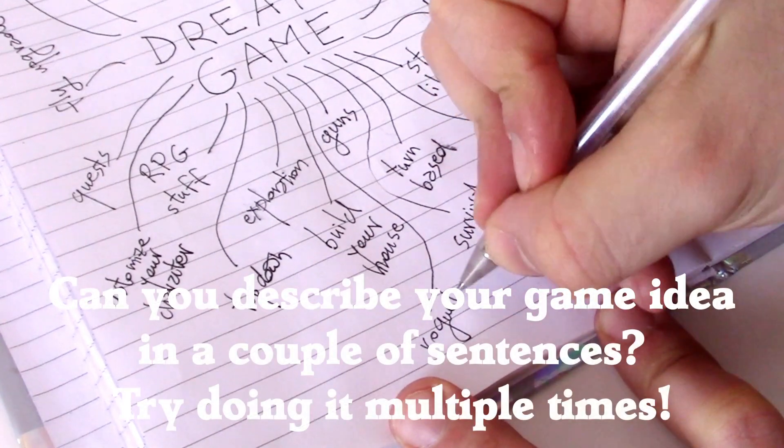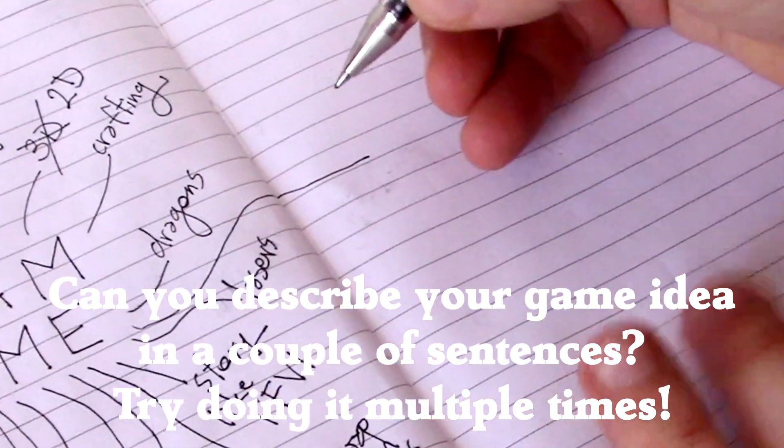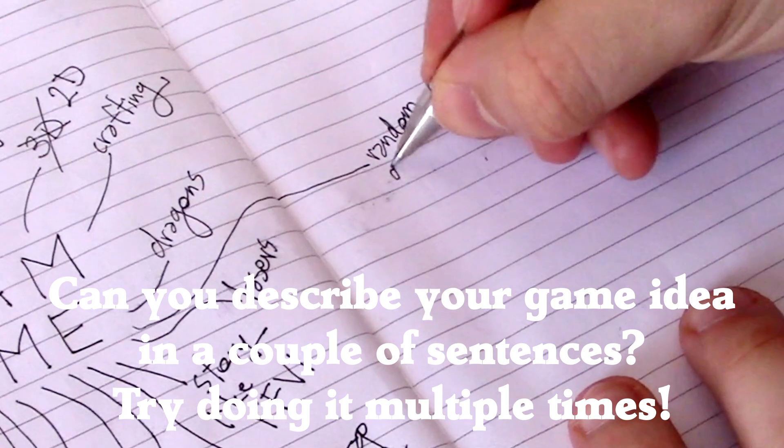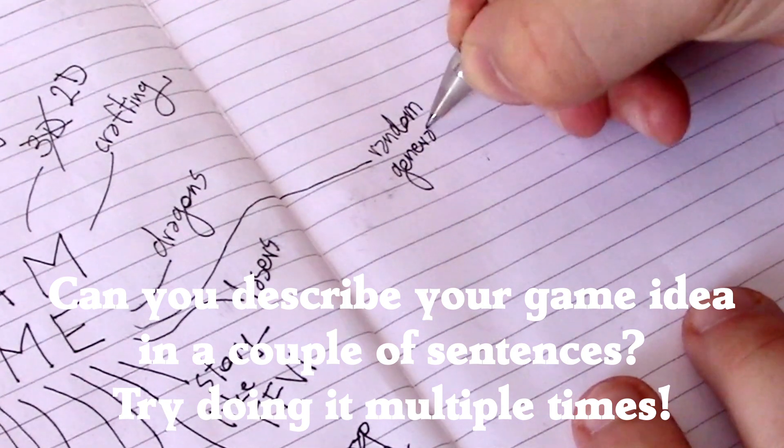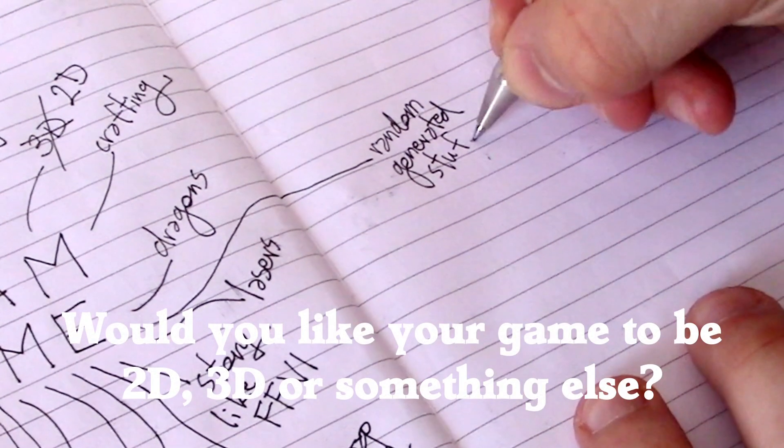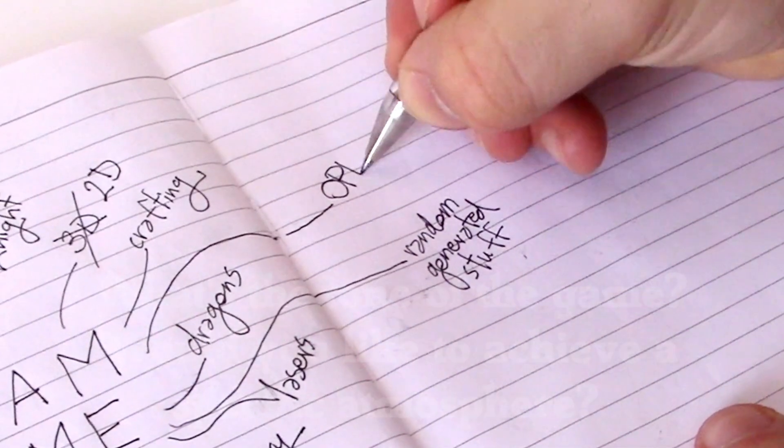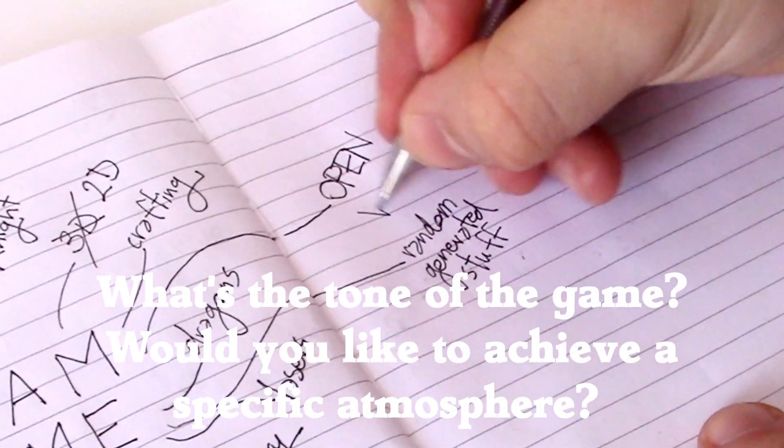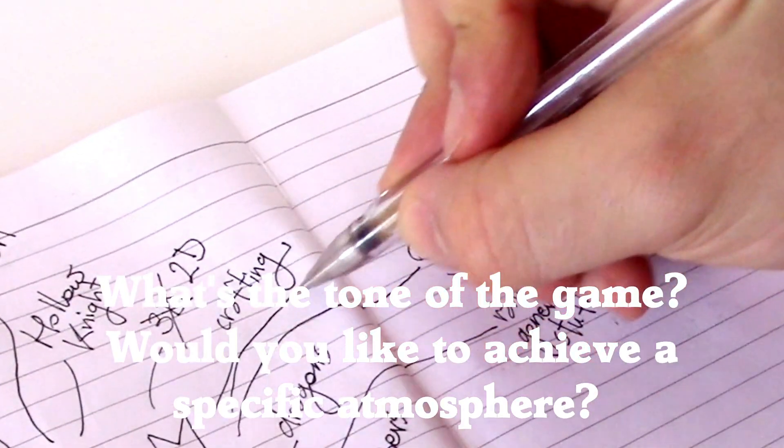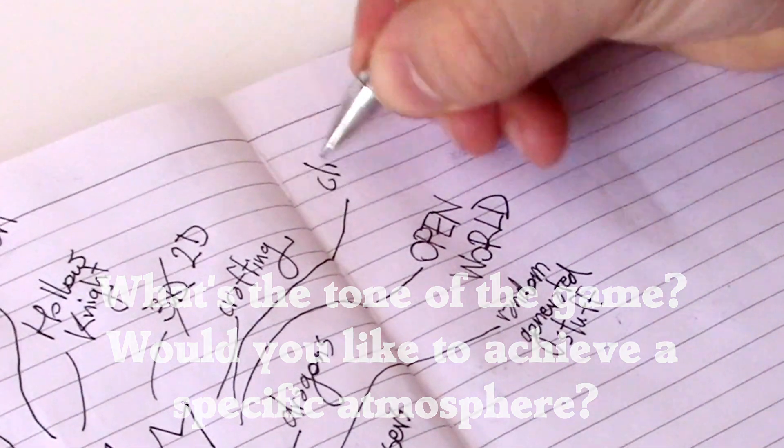Given that you have some sort of game idea, can you describe it in a couple of sentences? I challenge you to describe it a couple of times. Does the description change? That can be a very good sign that you haven't really decided on it yet. Is your game going to be 2D, 3D, or something in between? Have you actually taken the time to think about it? What's the overall tone of the game? Is there a specific atmosphere you'd like to achieve? Can you find a good example of that tone in another game that you maybe can be inspired from?